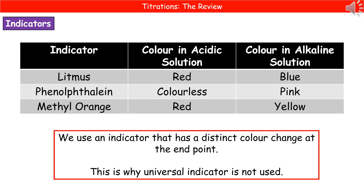To give you an idea about the indicators we can use in titration, there are three in the table here. We use these three indicators because they have a very distinctive colour change, so there is a clear end point to the reaction. Litmus starts blue in sodium hydroxide and goes red in an acidic solution. Phenolphthalein goes from pink to colourless, and methyl orange goes from yellow to red.